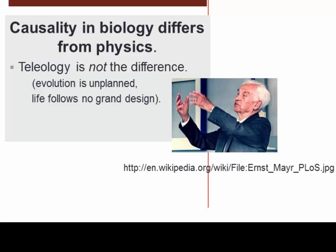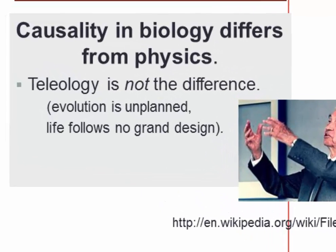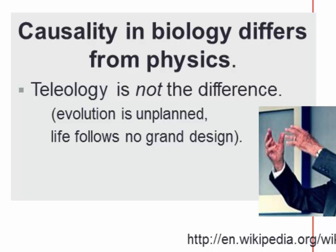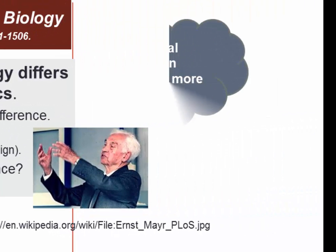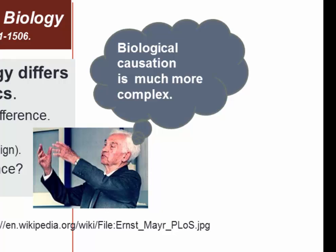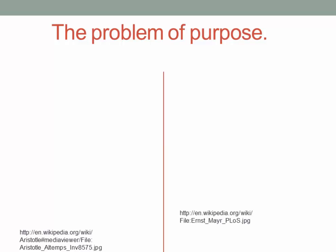It had long been argued that living things are simply different because they're created, often discussed in terms of teleology, which suggests that for life there is a grand design and a purpose. Mayr's argument is that this is not the key difference. He argues we can give mechanistic explanations of biology in terms of biochemistry, but the real difference is that biological causation is much more complex than the kinds of relations studied by physicists.